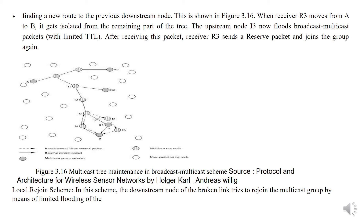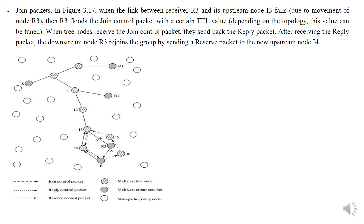Local rejoin scheme: in this scheme, the downstream node of the broken link tries to rejoin the multicast group by means of limited packets, as shown in figure 3.17. When the link between receiver R3 and its upstream node i3 fails, then R3 floods a join control packet with a certain TTL value. When tree nodes receive the join control packet, they send back a reply packet. After receiving the reply packet, the downstream node R3 rejoins the group by sending a reserve packet to the new upstream node i4.